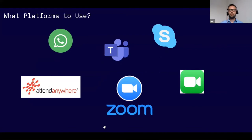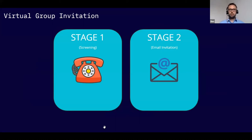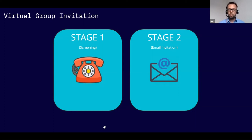When considering which platform to use, we evaluated several options and ended up with Microsoft Teams and Zoom, as these were most familiar to our clients and to us. For inviting clients, we had a two-stage process: first, a screening stage asking clients on the phone whether they had used video calling before to gauge how much support they might need to join the group; followed by an email invitation. We found that simpler invitations were better despite initially thinking detailed instructions would help clients with cognitive difficulties.